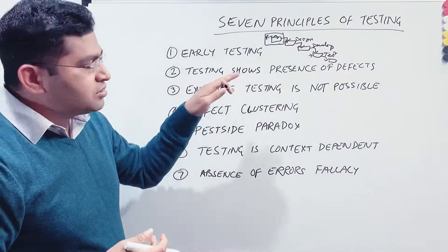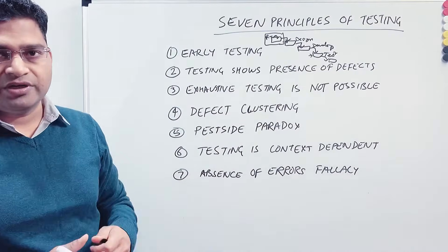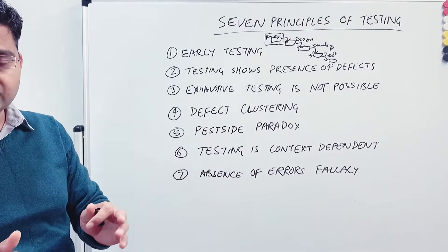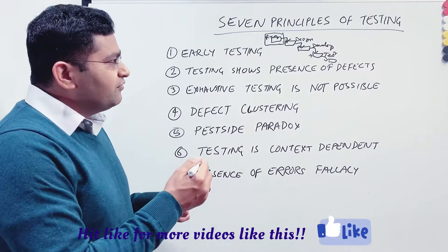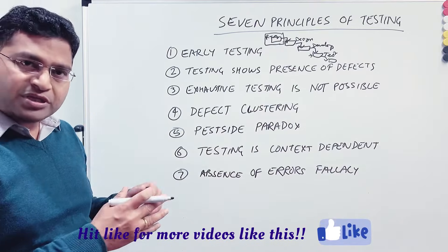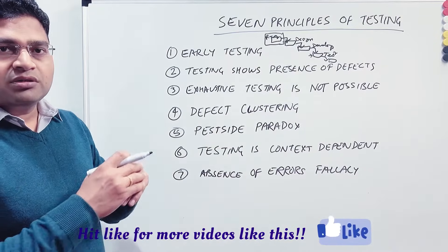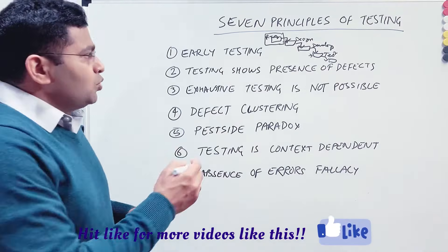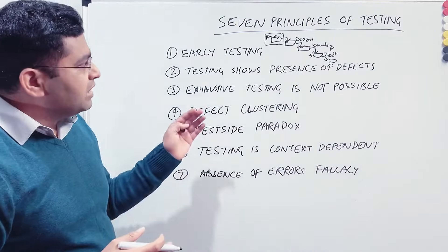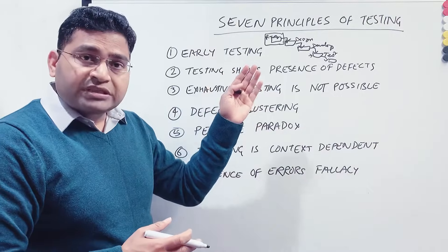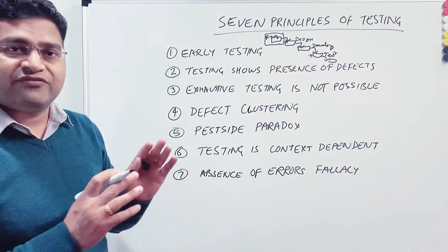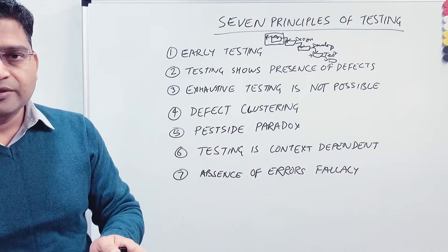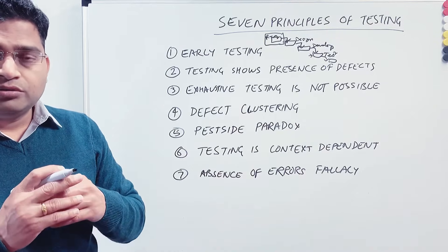The second principle is testing shows presence of defects. Testing will show that defects are present in the software, but it can never show that the product is defect-free. We've seen examples of big organizations — Yahoo, Flipkart — where even with huge testing capability, their launched software failed under different circumstances. When those organizations tested thoroughly, testing showed presence of defects, but never proved the software was defect-free. That's why production defects appear after deployment.